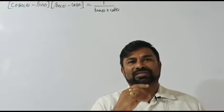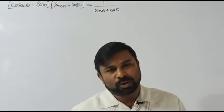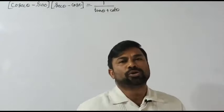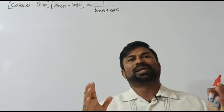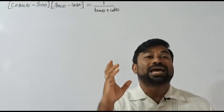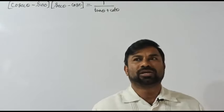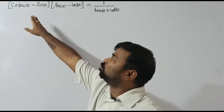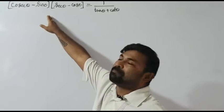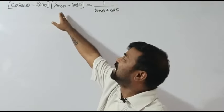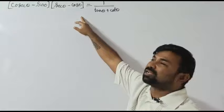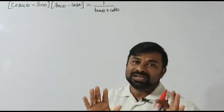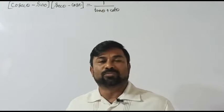Hello everyone, myself Marathi. Welcome to this math video session. In this video I'm going to explain a topic from trigonometry. I want to prove that cosecant θ minus sine θ, into secant θ minus cos θ, is equal to 1 divided by tan θ plus cot θ. This is what we are supposed to prove.